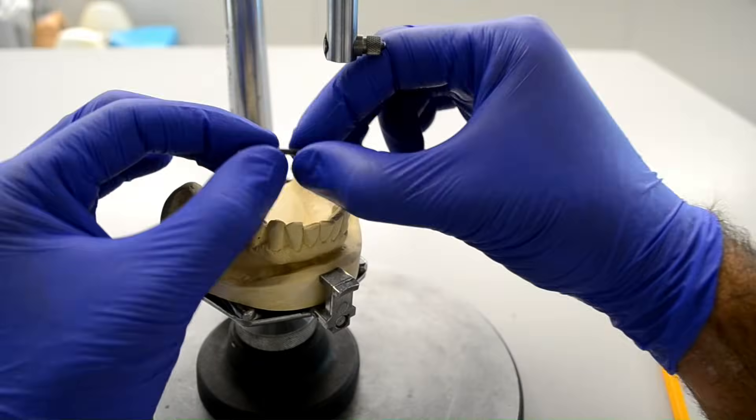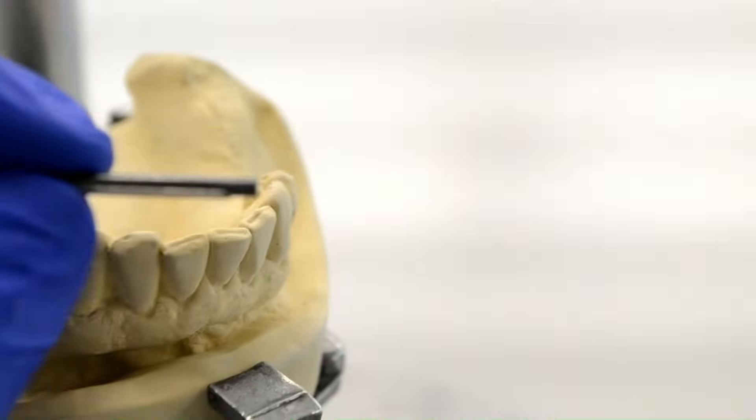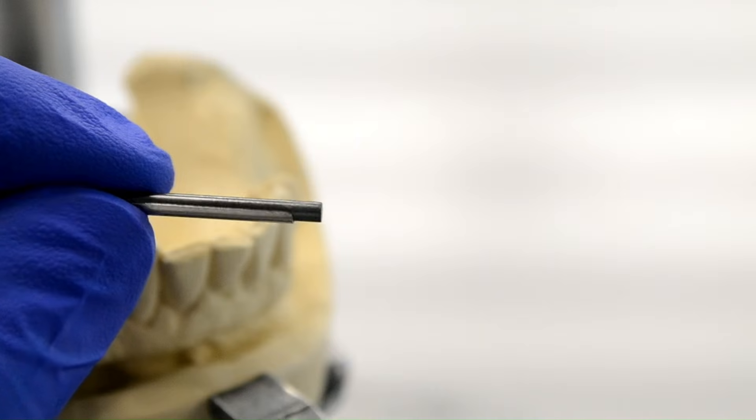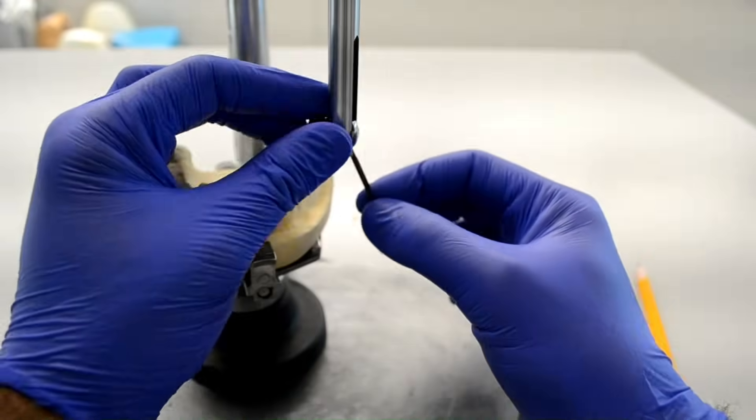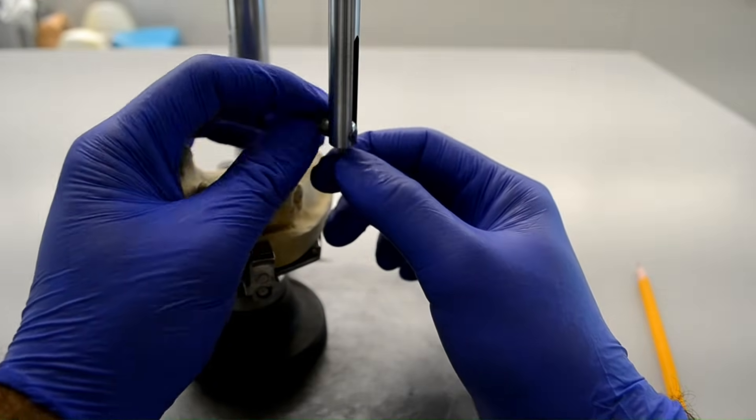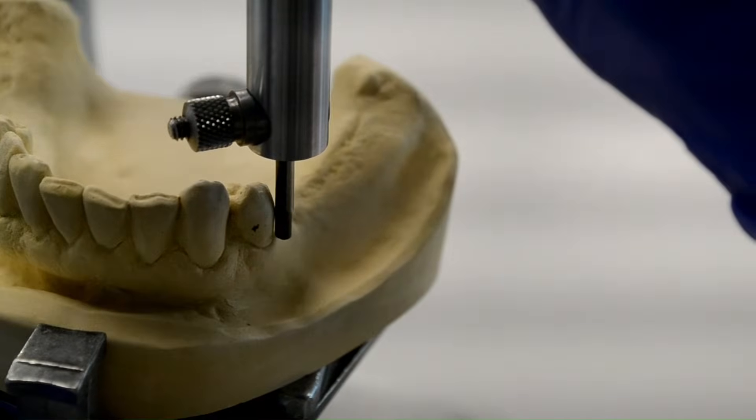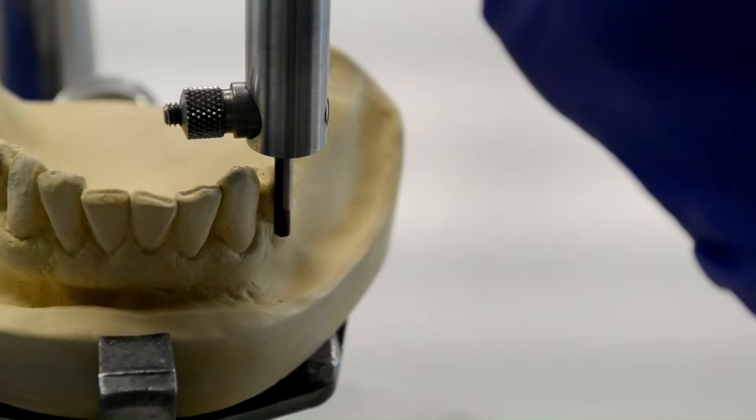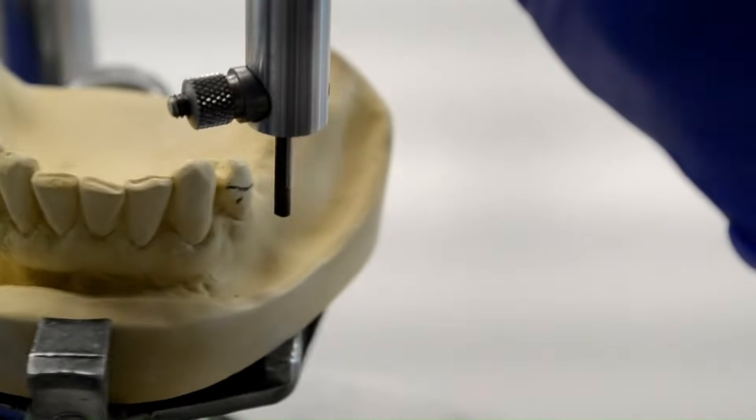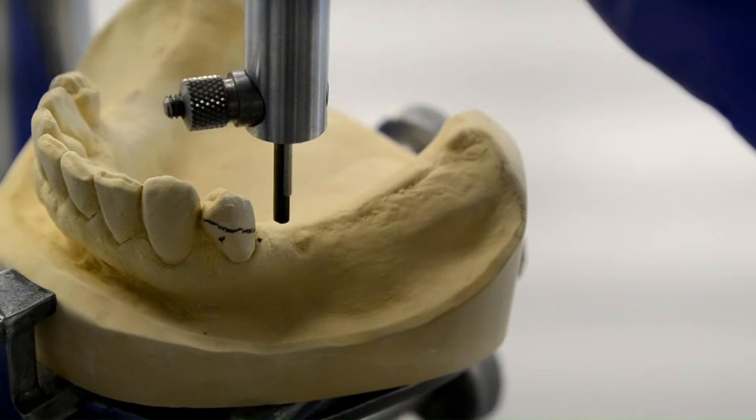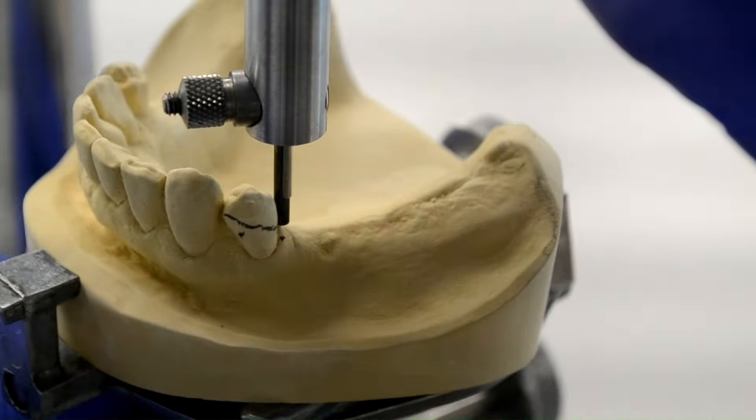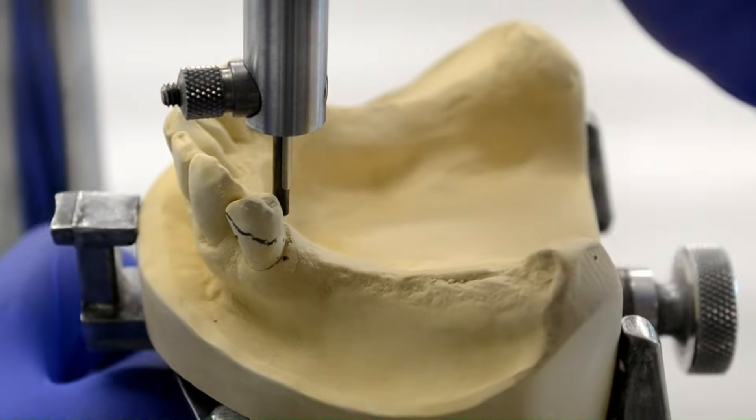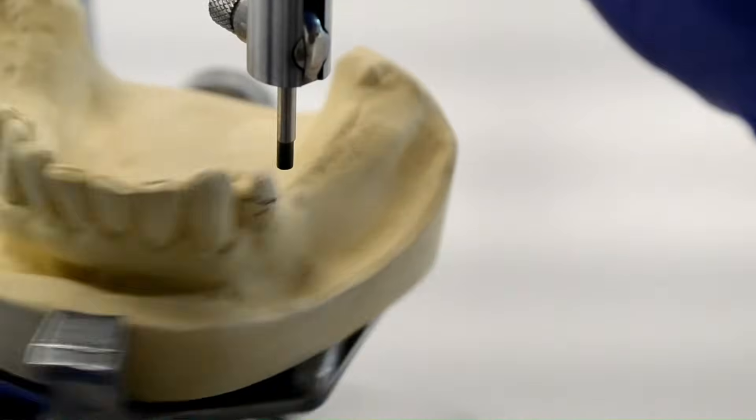Now that we're done identifying all the different undercuts, it's time to draw the survey line. This is done using the lead and the metal sleeve. They're both attached together and then attached to the mandrel. To correctly draw the survey line, we're going to ensure that only the side of the lead contacts the tooth and not the tip. The side of the lead is rubbed against the highest contour of each tooth and that leaves a line called the survey line. Anything under that line represents a degree of undercut.